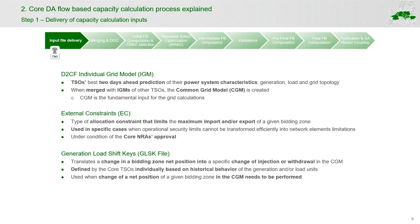Firstly, I would like to talk about the D2CF individual grid model. D2CF stands for the fact that the model is a two-day-ahead prediction of the status of the power grid. It includes the best prediction the TSO has about the generation, the load, the grid topology, and the planned outages such as maintenance. It is actually 24 files because TSO makes a separate prediction for every hour of the day. This file, when provided to the capacity calculation process, is merged by the merging entity to create the common grid model, which is the most crucial and fundamental input for the whole capacity calculation.